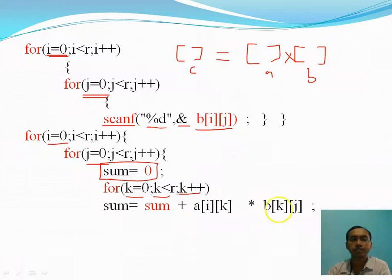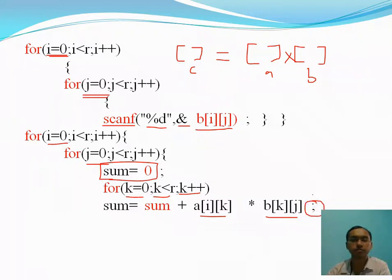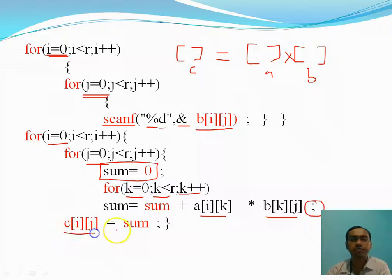Inside the k loop, sum equals sum plus A[i][k] multiplied by B[k][j]. This is the standard matrix multiplication formula — i to k, and then k to j. We write this followed by a semicolon, and then store sum into C[i][j] — the result matrix.